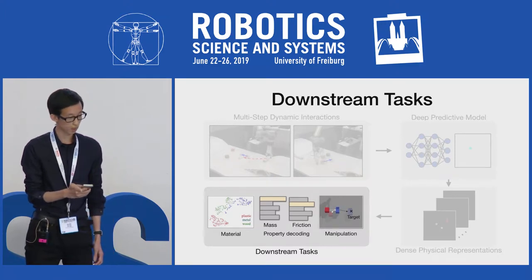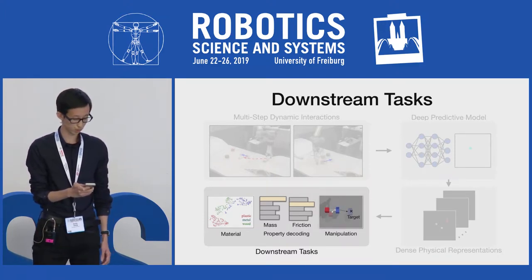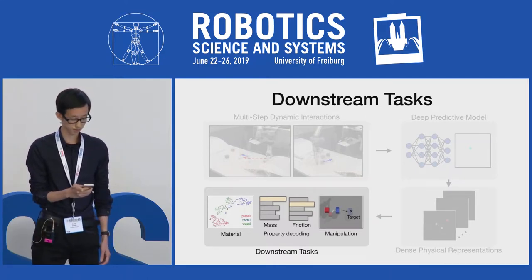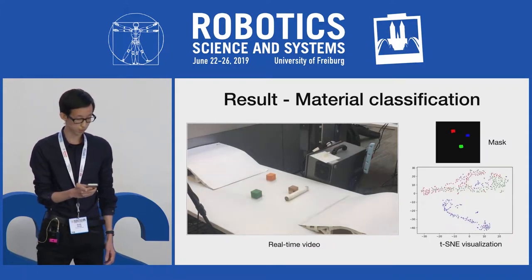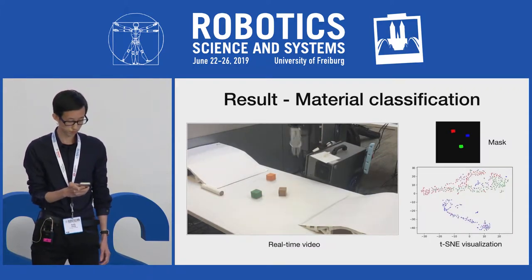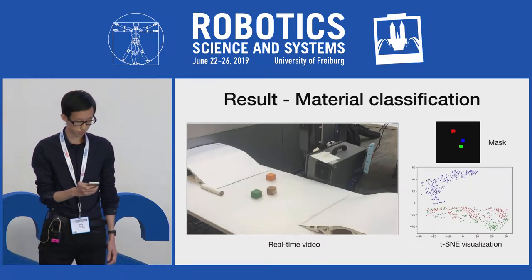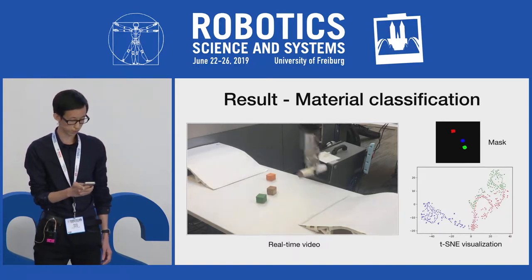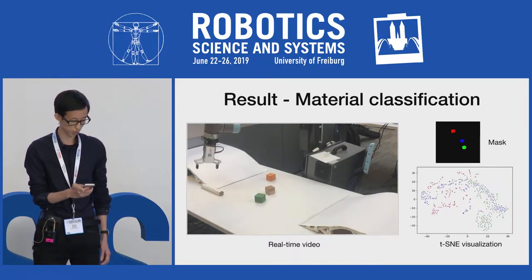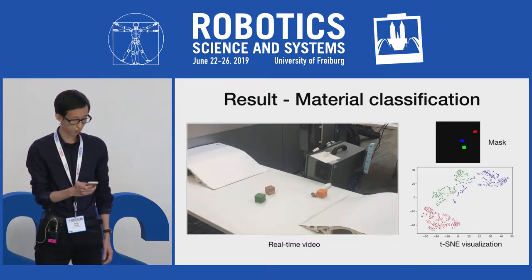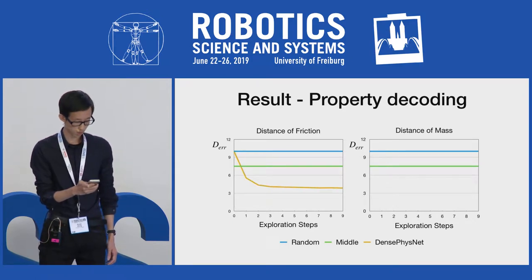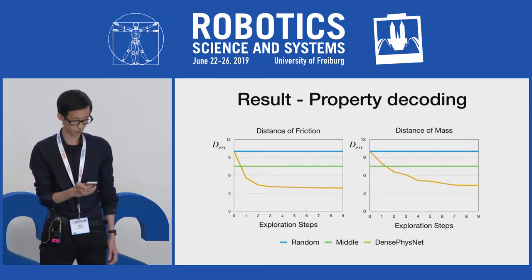We execute a series of experiments to explore whether the learned representations encode meaningful information about physical object properties and whether they are useful for downstream tasks. We first analyzed whether the learned representations can be used to distinguish object properties. In this experiment, the robot interacts with three objects with different physical properties but the same appearance. We can see that after several interactions, the representation features gradually separate themselves from each other in the embedding space. We then trained a linear classifier to decode physical properties on an annotated dataset. Over the course of multiple interactions, the error decreases quickly, which means that our model gradually accumulates knowledge of object physics.